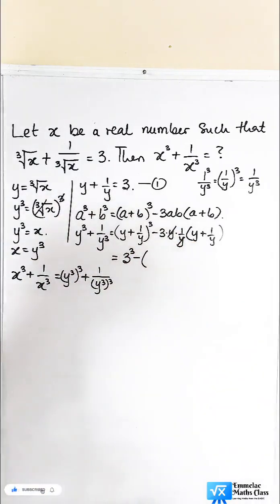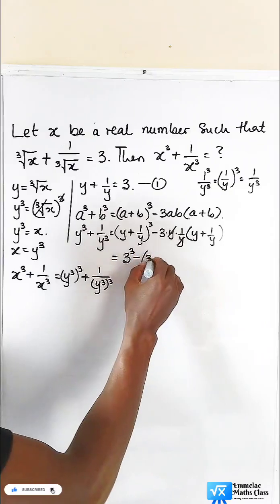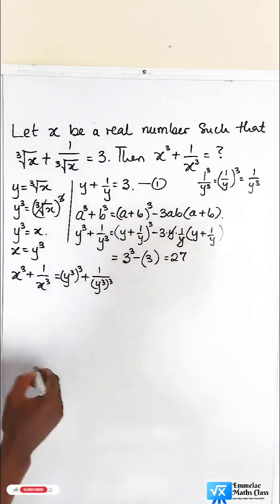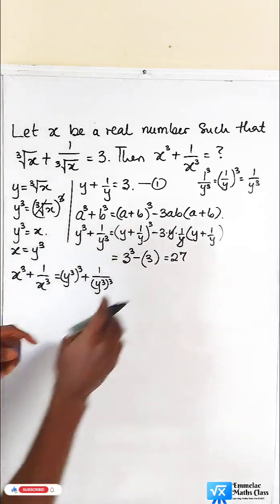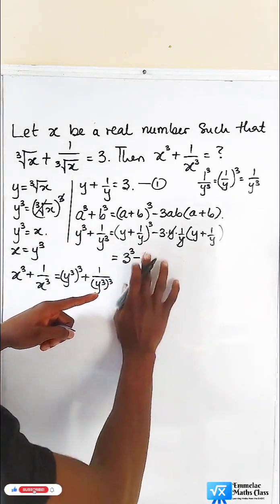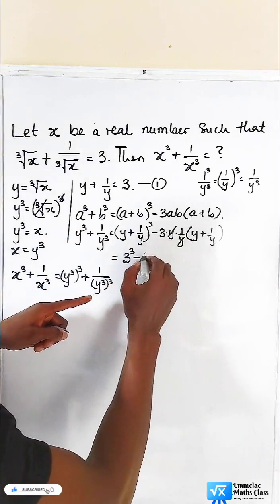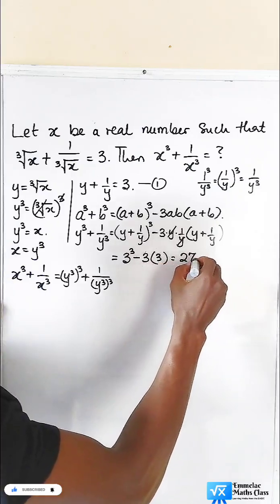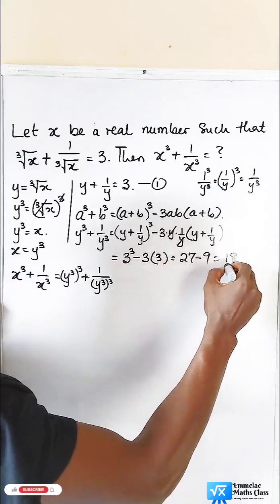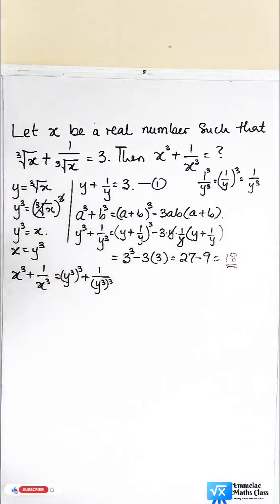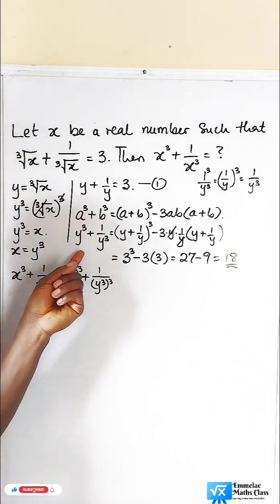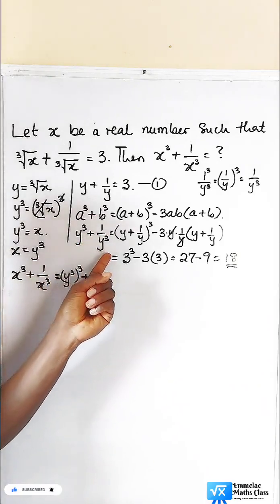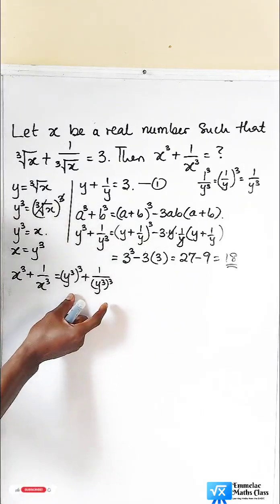So here we have 27. Then minus 3 times 3 gives us 9, so 27 minus 9 gives us 18. Now that we've gotten the value for y cubed plus 1 over y cubed, which is 18, let's come back to the main expression.